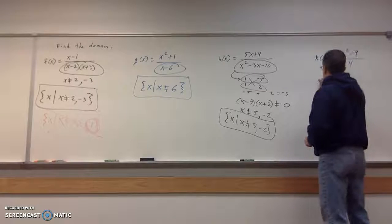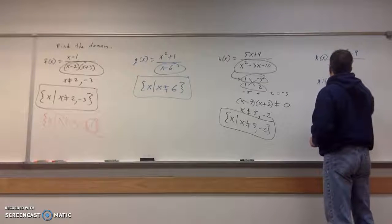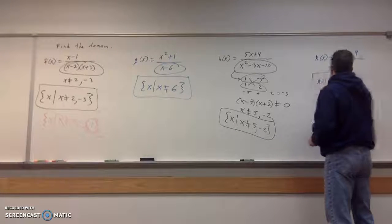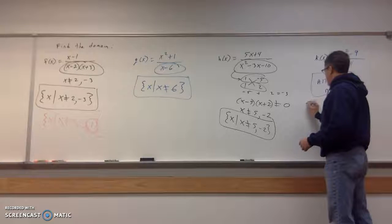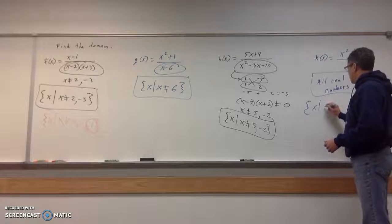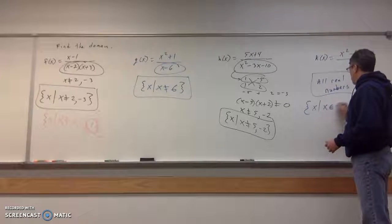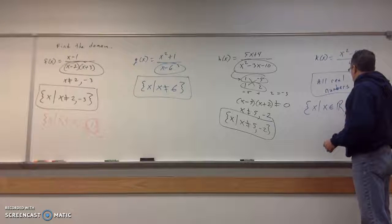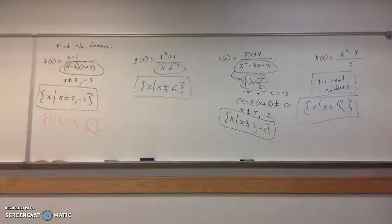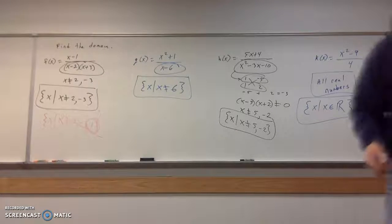So your domain is all real numbers. You want to see it written in set-builder? Sometimes people write it like this. It's the value of x. The value of x such that x belongs to all of the real numbers, like that. So that was actually easier than you thought it was, huh?